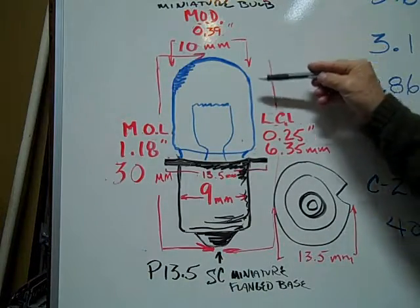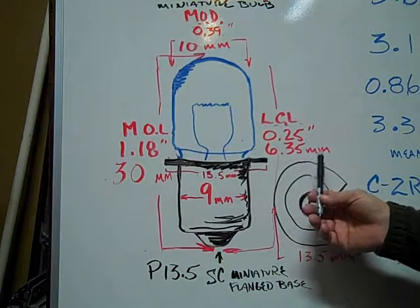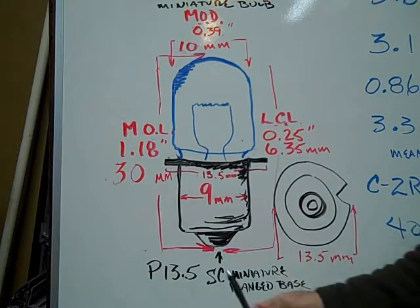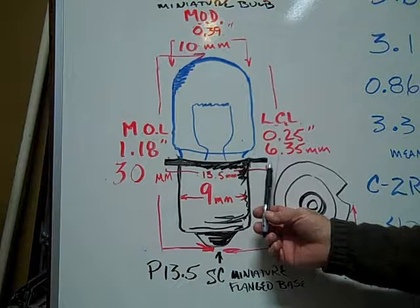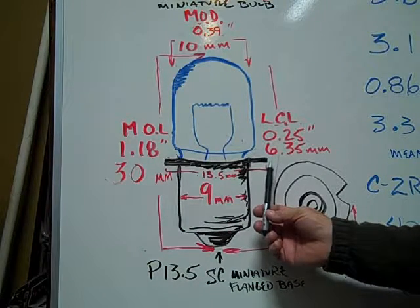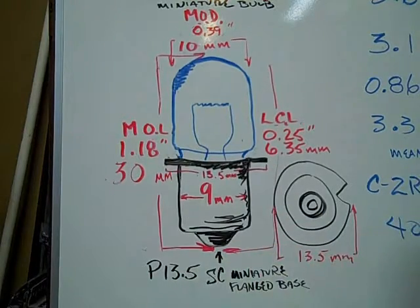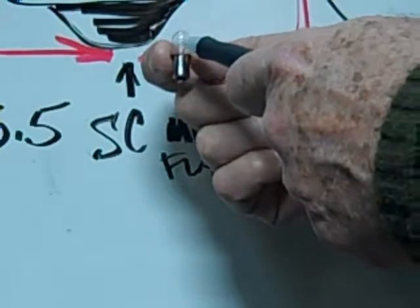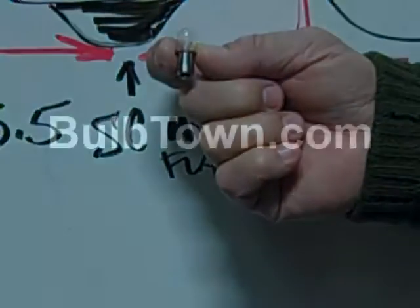The light center length is 0.25 inches or 6.35 millimeters. The flange measures 13.5 millimeters diameter and the base is 9 millimeters in diameter. This is an example of an XPR-16 Xenon Miniature Bulb.